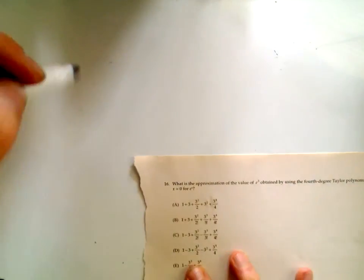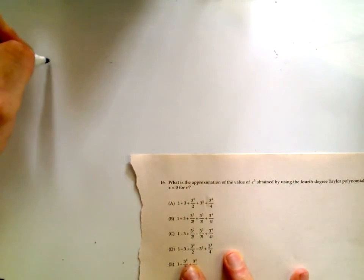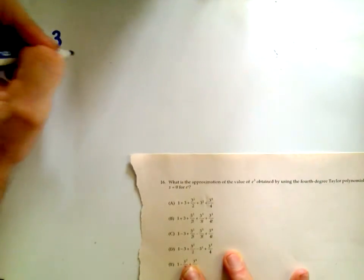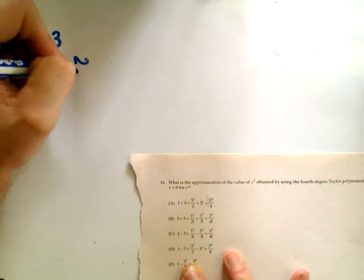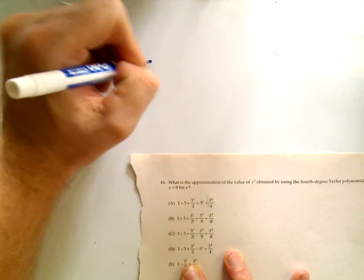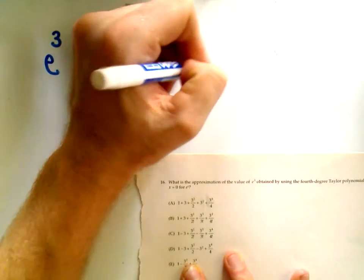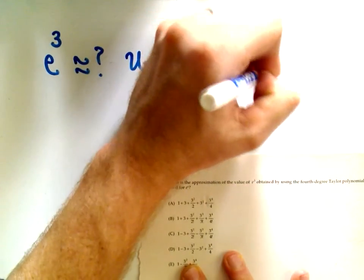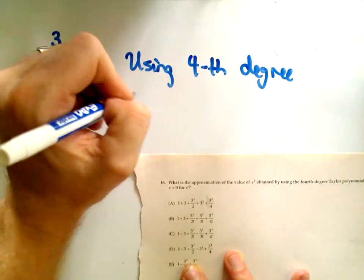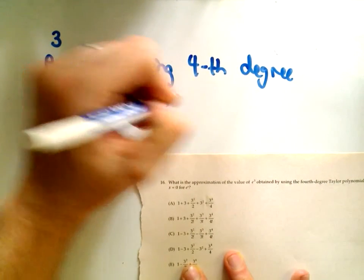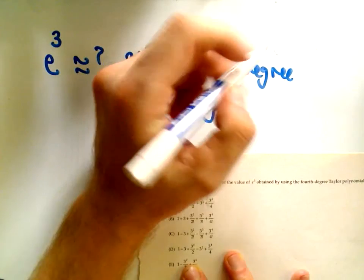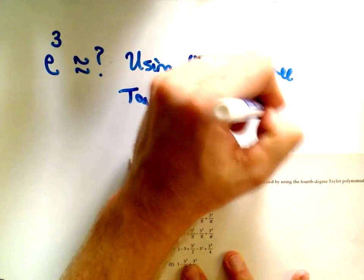Number 16 says basically we want an approximation for e to the third using a fourth degree Taylor polynomial centered at x equals zero.